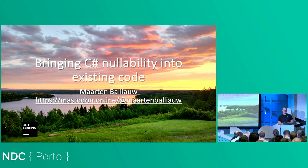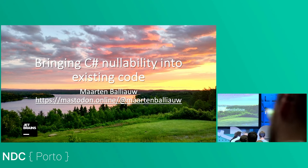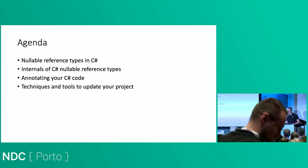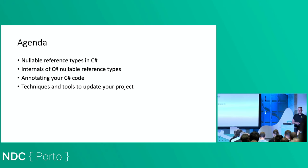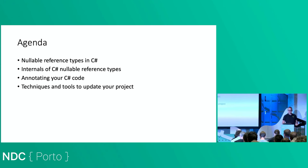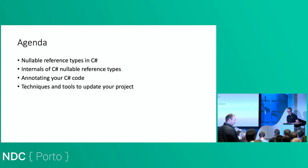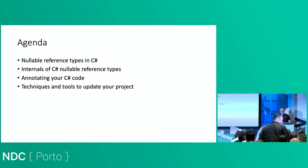Then I guess we can start. I have a little bit of an introduction on how nullable reference types work and what they are. But once we're through that, we will look at migrating your code. The agenda for today: first, talk a little bit about nullable reference types in C#. We're also going to look at the internals — not because I want to show you IL code, but because there are a couple of attributes shown in intermediate language that may be useful if you're using reflection. Then we'll look at annotating your C# code and the different annotations available. Finally, we'll go full speed ahead and look at techniques and tools that can help you migrate.